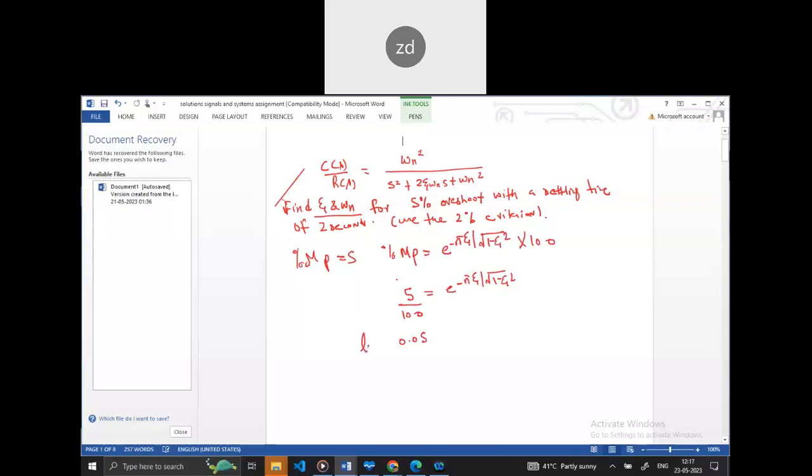Then what we do is take log on both sides. Once we take log, this exponential term vanishes. So it becomes -πζ/√(1-ζ²). From here we can calculate the value of zeta.